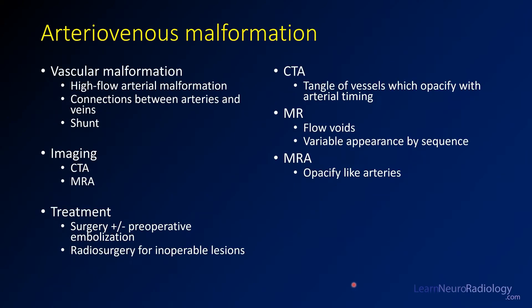This is a case of an arteriovenous malformation, or AV malformation. These are high-flow arterial malformations that have abnormal connections between the arteries and veins. The key imaging modalities you want to use are CTA and MRA, which help characterize the type of flow in these lesions. Treatment is frequently surgery, followed by preoperative embolization.